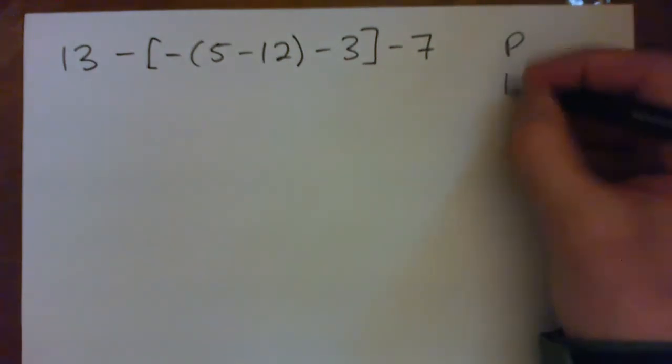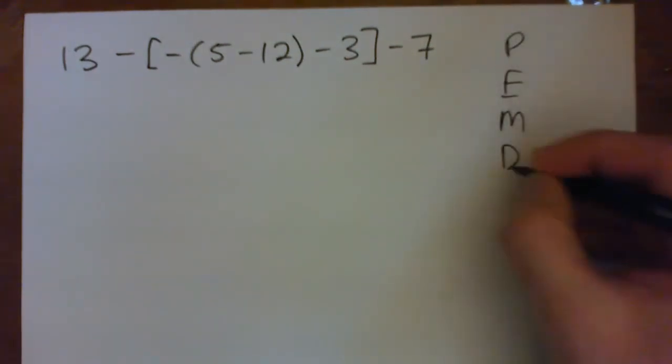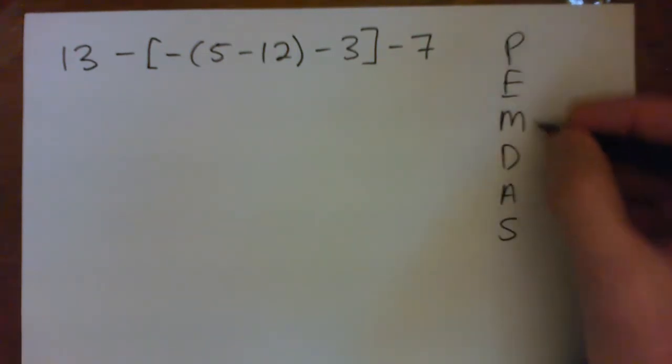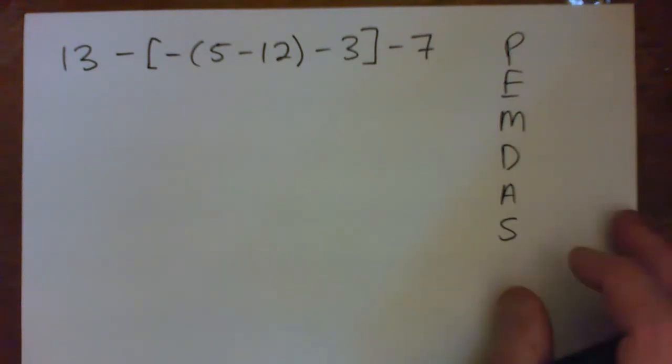So we want to think about our order of operations again, PEMDAS. We need to do parentheses, then exponents, then multiply or divide from left to right, then add or subtract from left to right.